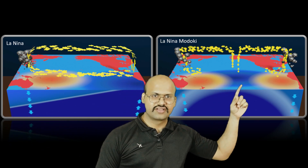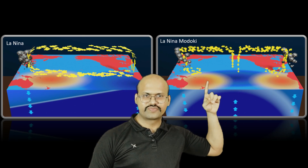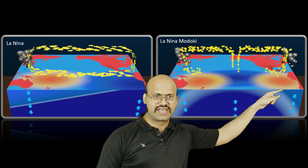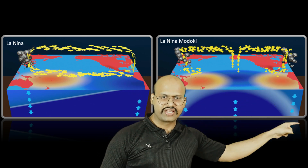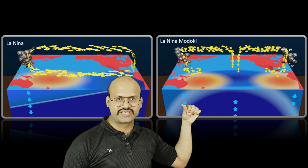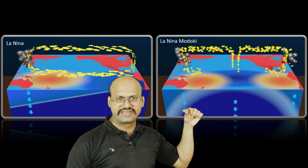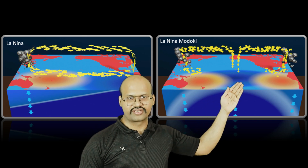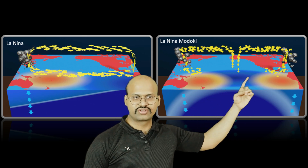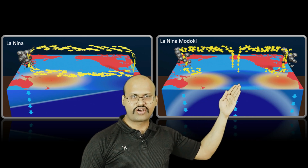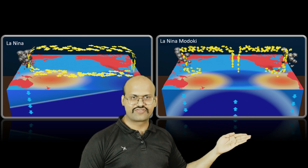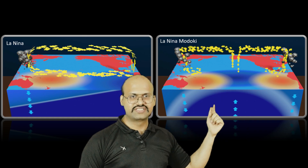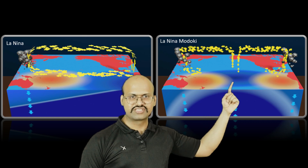In La Niña Modoki, since wind moves from the central Pacific toward both coastlines, warm water accumulates on both coastlines causing downwelling on both sides and making the thermocline deeper there. In the center, water is depleted because it has moved to both sides, so water from the deeper parts of the ocean rises to replace it, causing an accumulation of cold water and bringing the thermocline close to the sea surface in the central Pacific.